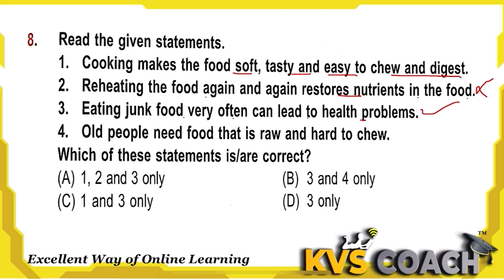Statement 4: Old people need food that is raw and hard to chew — wrong, old people need soft food that is easily chewable. So statements 1 and 3 are the only correct statements. Option C is the right answer.